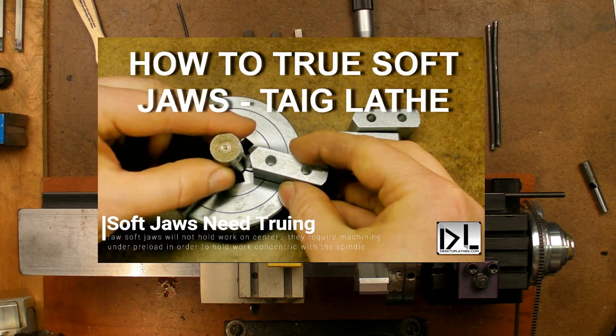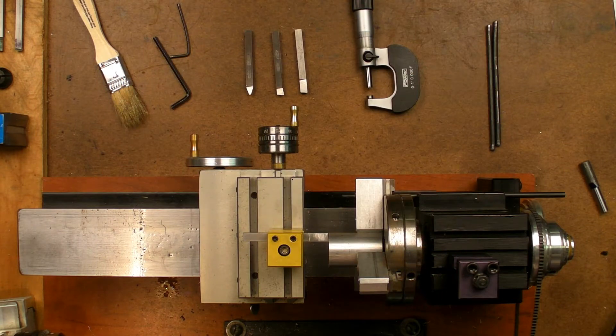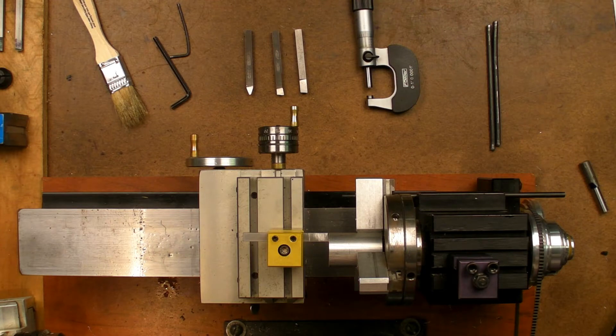So in my previous video on machining soft jaws, I prepared the soft jaws for holding stock concentric with the spindle. I'm going to use that same setup to demonstrate how to use the stock tool bits to perform basic turning and facing cuts. So let's get started.